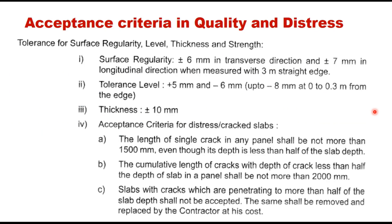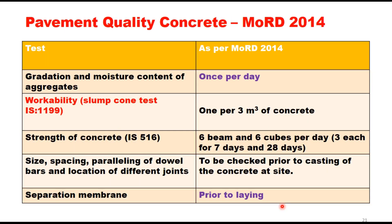The acceptance criteria and distress tolerance for PQC cover surface regularity, level, thickness, and strength. Surface regularity: plus or minus 6 mm in the transverse direction and plus or minus 7 mm in the longitudinal direction, measured using a 3-metre straight edge. Level tolerance: plus 5 mm to minus 6 mm. Thickness tolerance: plus or minus 10 mm. The acceptance criteria for distressed or cracked slabs is the same as for RCCP: single crack length not more than 1500 mm, cumulative crack length not more than 2000 mm per panel, and slabs with cracks penetrating more than half the slab depth will not be accepted and must be removed and replaced at the contractor's cost.